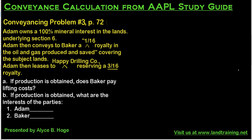Welcome to our next calculation in the AAPL study guide. This is conveyancing problem number three and we're still on page 72. I've basically left the same fact pattern in place because I want you to see that they're really just changing up very few of the details. All they've changed from the prior question is the royalty from 1/6 to 1/16th, and the oil and gas company from Big Oil to Happy Drilling Company. The questions are a little different but the fact pattern is the same. If you understand the concepts from conveyancing problems one and two, you're going to do fine on this one as well.